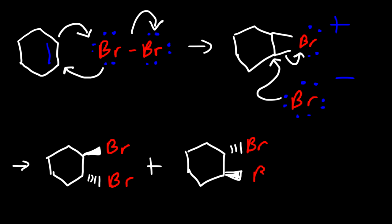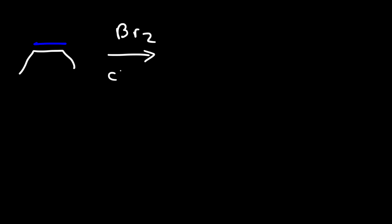That's the mechanism for the halogenation of alkenes. Now let's try an example: we have cis-2-butene and we wish to react it with bromine using dichloromethane as a solvent. What are the products that we can get in this reaction?